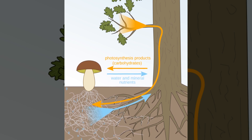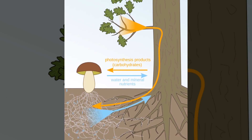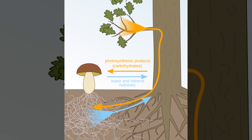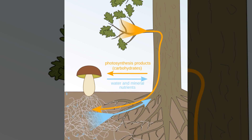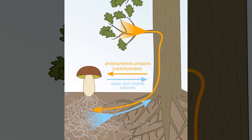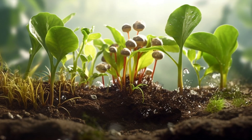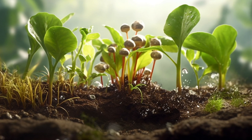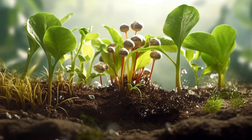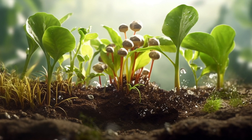The symbiotic relationship between mycorrhizal fungi and plants is based on a mutual exchange of nutrients. The plant provides the fungus with carbohydrates that it has produced through photosynthesis, while the fungus provides the plant with nutrients and water that it has extracted from the soil. In addition, mycorrhizal fungi are able to help plants acquire nutrients that they would not be able to obtain on their own, such as phosphorus, which is often present in soil in forms that are not easily accessible to plants.